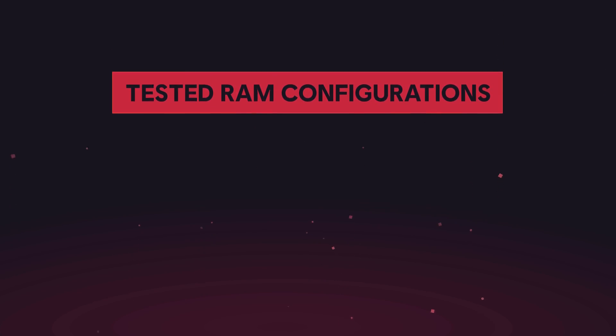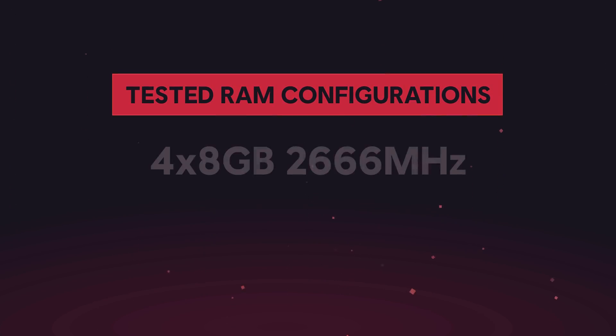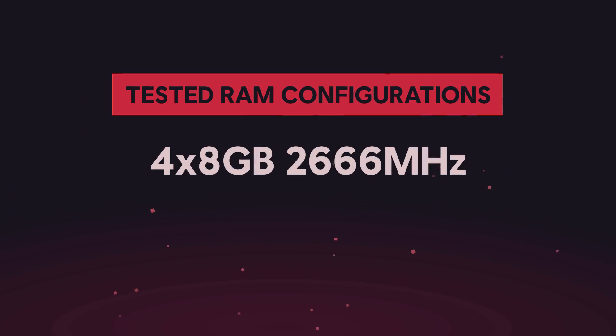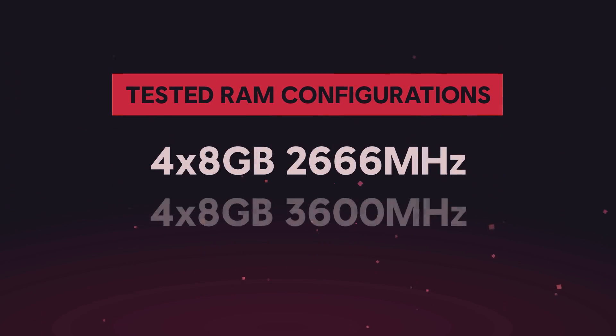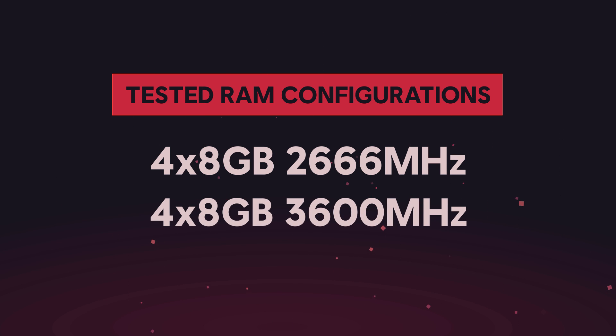Threadrippers also love RAM, and you'll notice that four sticks of fast memory do wonders for your OBS encoding. For our setup, we tested both four sticks of 8 gigs at 2,666, and four sticks of 8 gigs at 3,600, which we slowed down to 3,200 to keep it super stable — and both of these configurations work great.